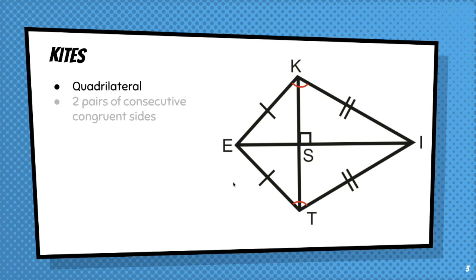So a kite is a quadrilateral. It has exactly two pairs of consecutive congruent sides, but the opposite sides are not congruent.